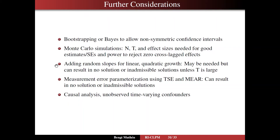Some models require a random slope or quadratic slope rather than just a random intercept. But combining that with a structure for the residuals within cross-lagged effects may result in no solutions or inadmissible solutions unless T is large — much larger than the typical T equals 3, 4, or 5. You can also view some of these models as measurement error models and parameterize them using the trait-state-error model or the measurement error AR model, as discussed in the paper. However, it is a more fragile type of parameterization that can easily result in no solution or inadmissible solutions.